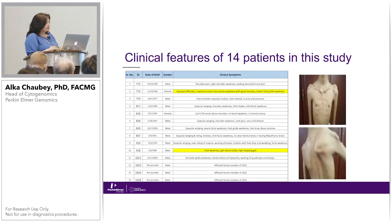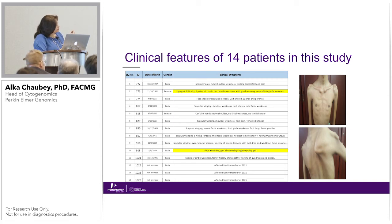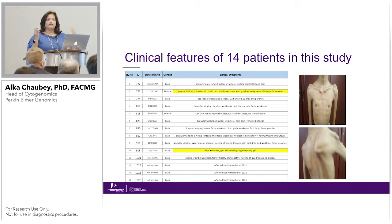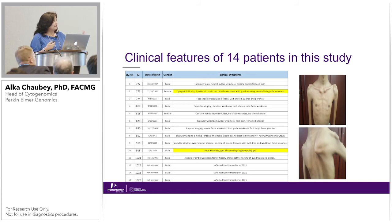Fourteen patients were used in the study. Two highlighted samples — 773 and 918 — included patient number 11, who was part of a complete family: the proband, the father, the uncle, and the grandfather, all four with classic FSHD symptoms. The image of the proband shows the classic scapular winging profile.